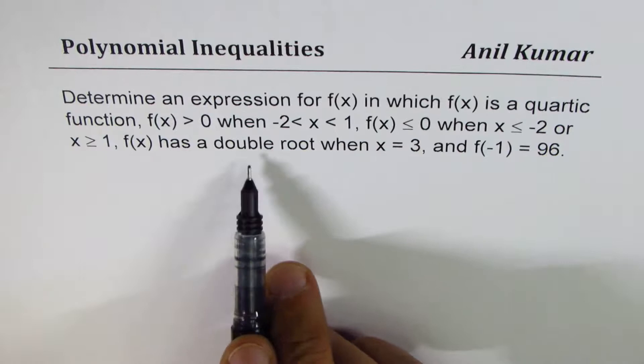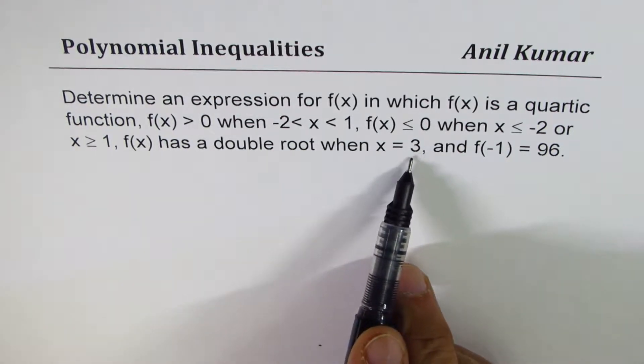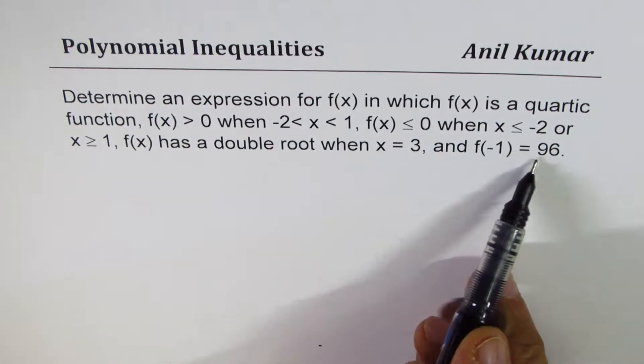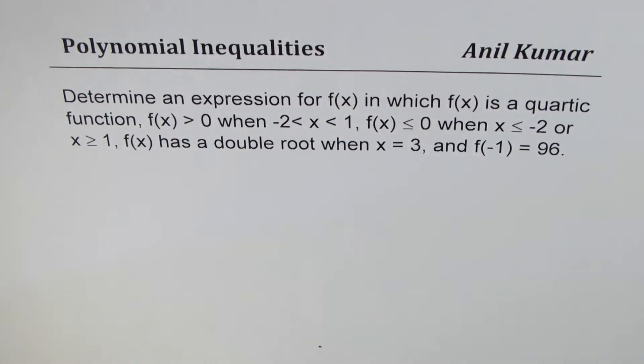f(x) has a double root when x equals 3 and f(-1) = 96. So, we are given a lot of conditions here.